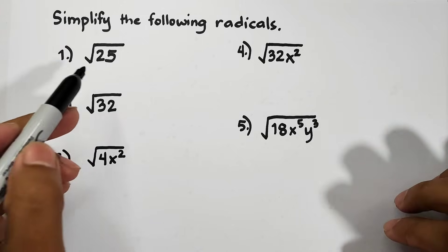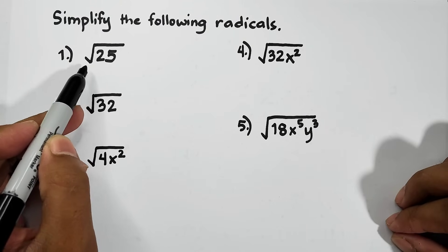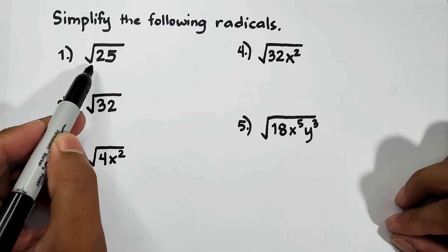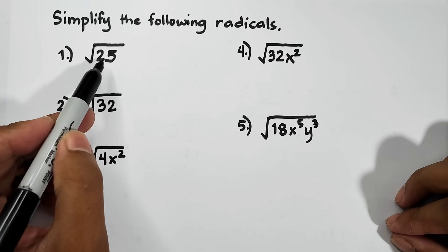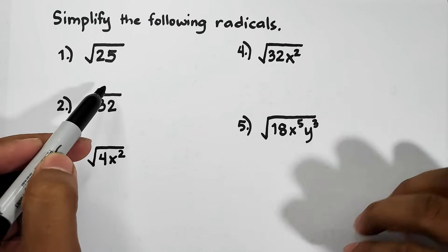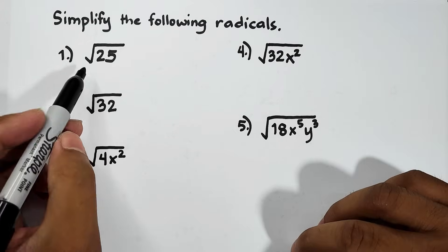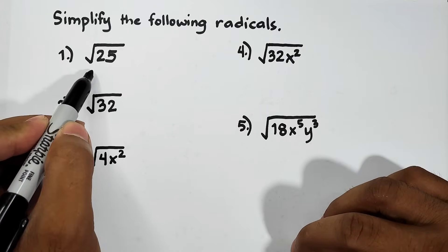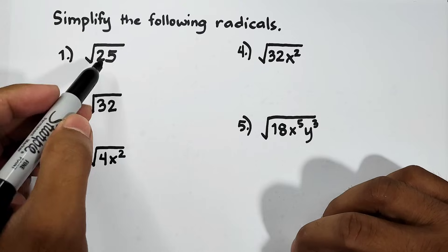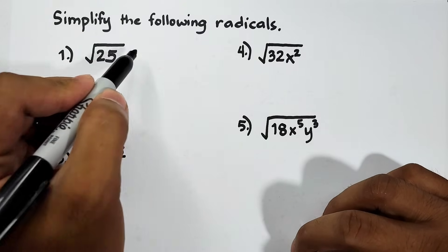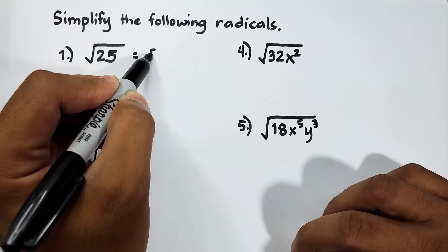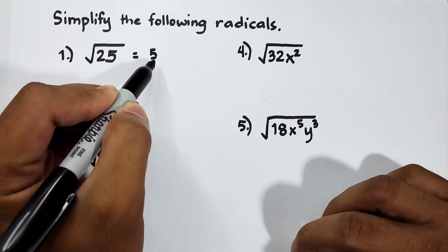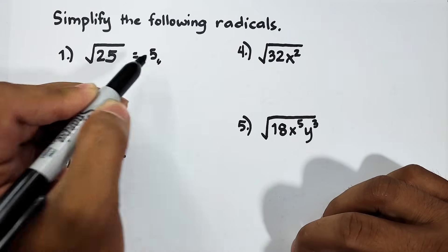So now let's try to solve or simplify the following radicals. What we have here is the square root of 25. We know that 25 is a perfect square, meaning we can get a perfect root for 25, and the square root of 25 is simply 5. You need to memorize this.